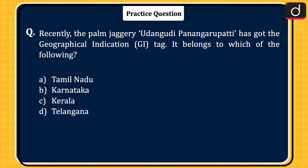Now it is time for the practice question. Recently, Palm Jaggery (Udaan Gudi / Panangaru Pati) has got the Geographical Indication tag. It belongs to which of the following — Tamil Nadu, Karnataka, Kerala, or Telangana? Send the answer of this question in the comment section. Stay tuned for the next episode. Thanks for watching.